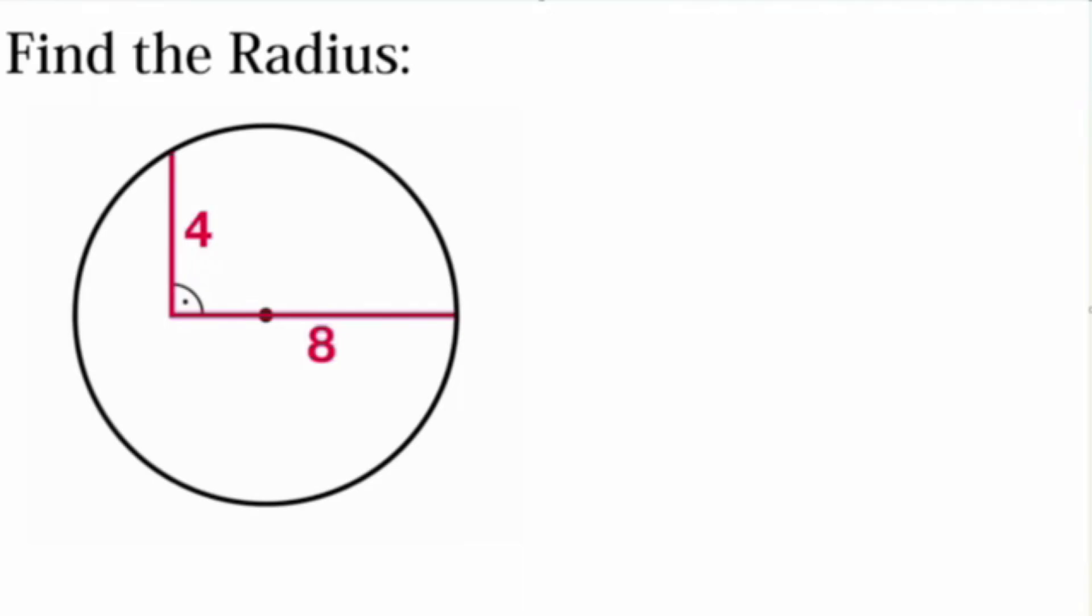So how do we use this? First of all, what we want to find is this value here. I'm going to call it x, because if we find x, that means we basically found the diameter, right? Because 8 plus x would be the diameter. And then if we're able to half the diameter, we'd get the radius. So let's name this side length x.